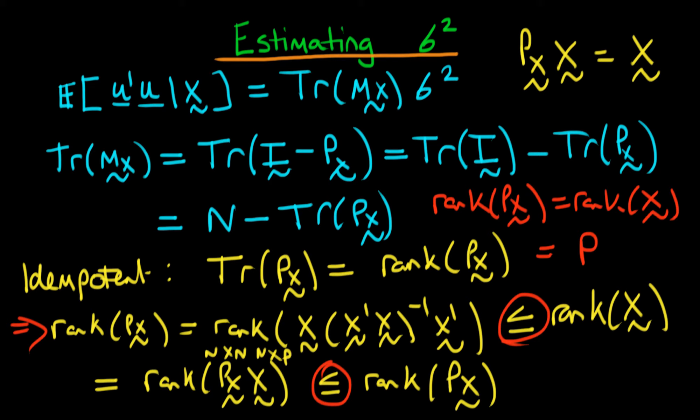Hence, we can replace the trace of mx times sigma squared. The trace of mx equals n minus p, so we can write an unbiased estimator for sigma squared as sigma hat squared equals u prime u divided by n minus p. Notice the difference from the version we suggested before - we've got n minus p on the bottom, not just n. This correction makes it unbiased and consistent.